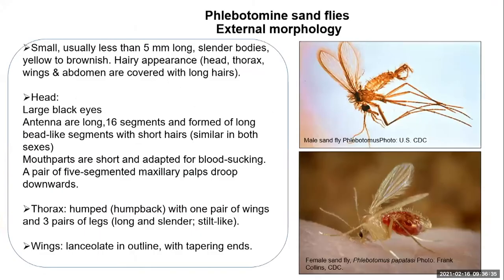The external morphology of the phlebotomine sandfly: there are two images shown. They are small — much smaller than the mosquito — with slender bodies and a hairy appearance. The hair covers the head, thorax, wings, and abdomen. Because of this hair and their tiny size, they are unnoticed when they bite and can inflict multiple bites.